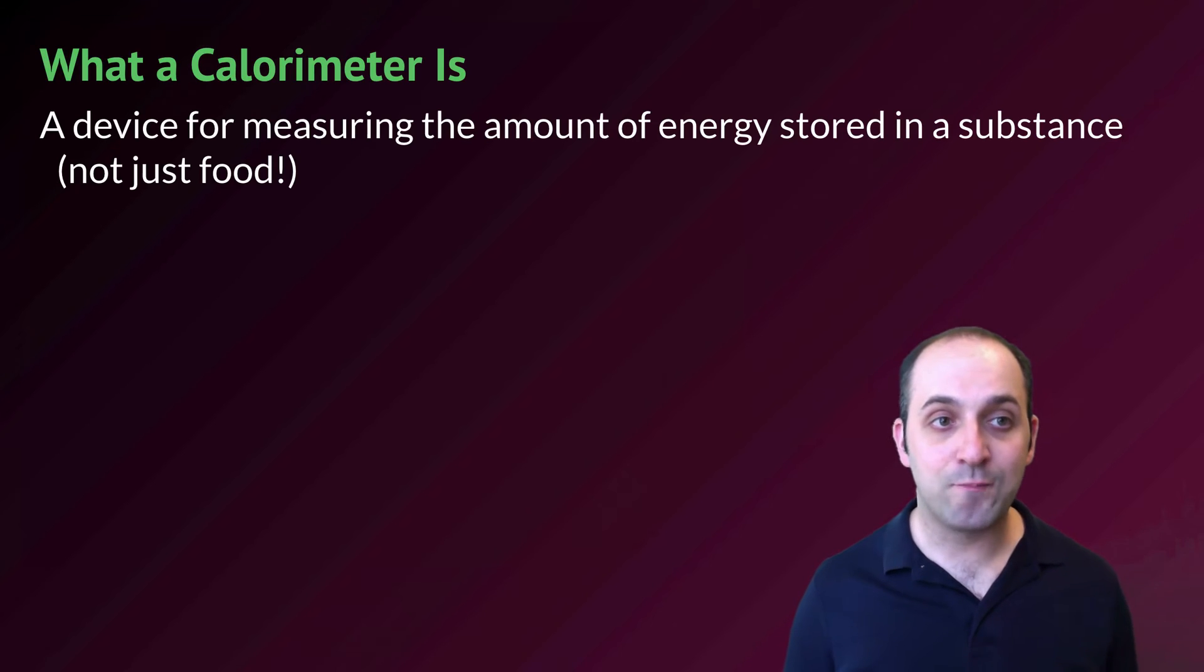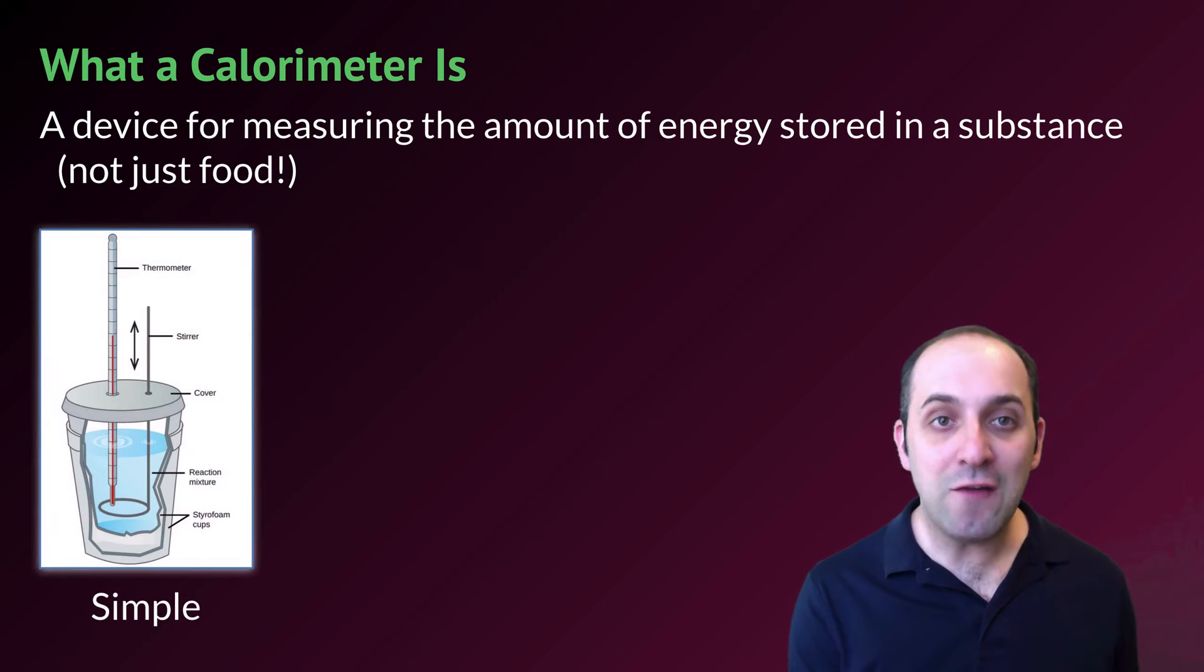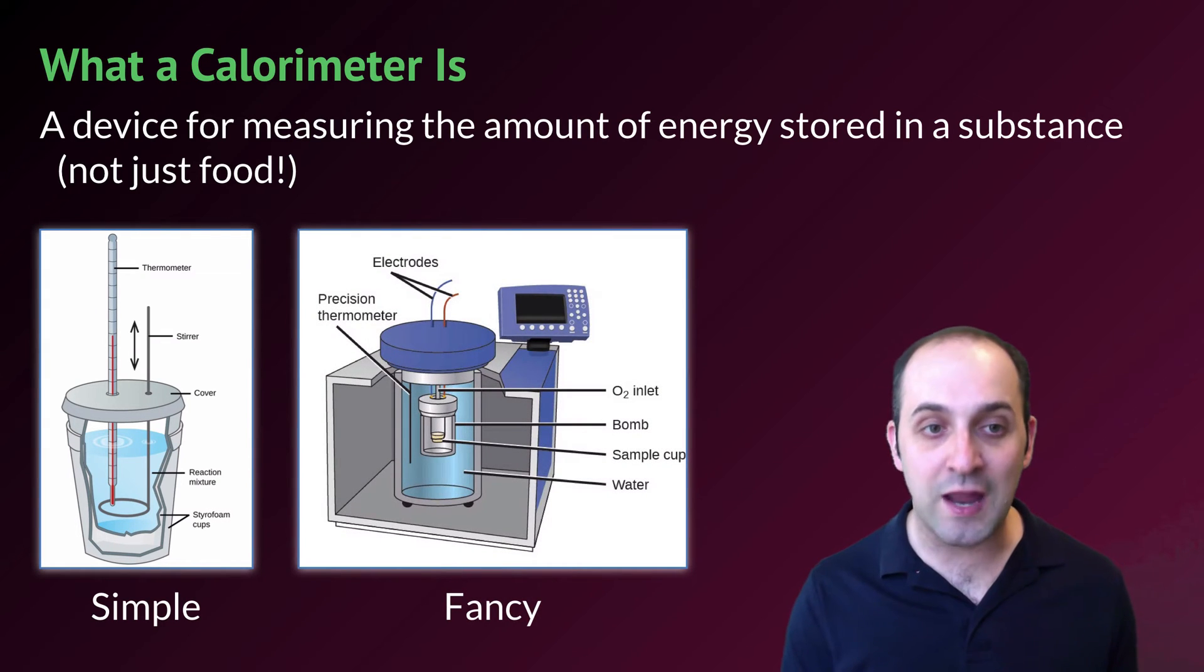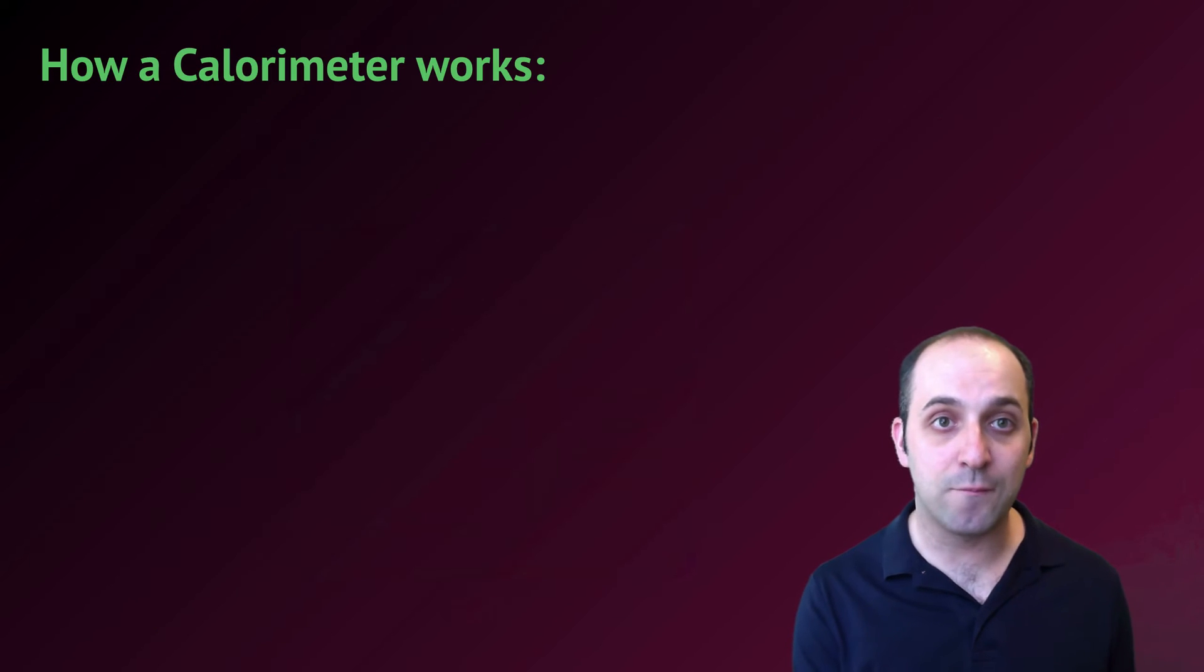Let's take a moment and go back and remember what a calorimeter is. It's simply a device for measuring the amount of energy stored in a substance, and that substance does not have to be food. There are a lot of different kinds of calorimeters that we can create. This is a very simple calorimeter which just uses a couple of styrofoam cups and some water and a thermometer. This is a much fancier calorimeter which is called a bomb calorimeter, which gives much more precise and accurate values for the energy content of the substances that are reacted inside of it.